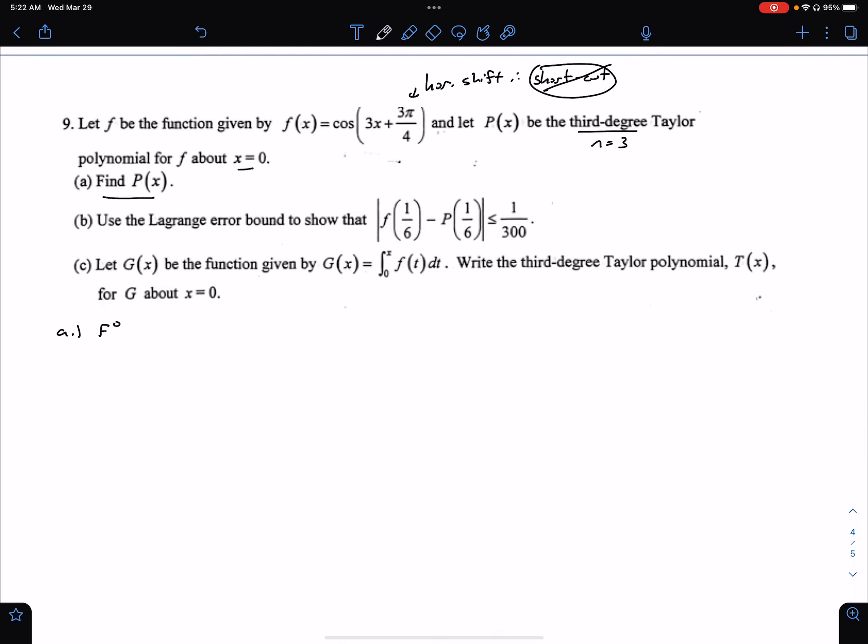we are going to look at the zero derivative, which is just cosine(3x + 3π/4). The first derivative, just chain rule, negative 3 sine(3x + 3π/4).